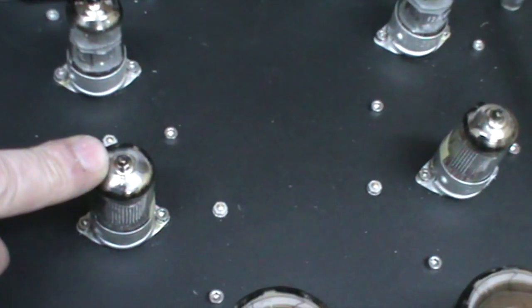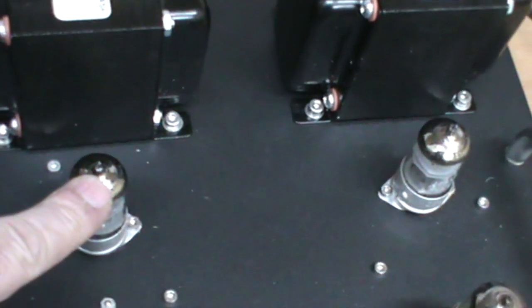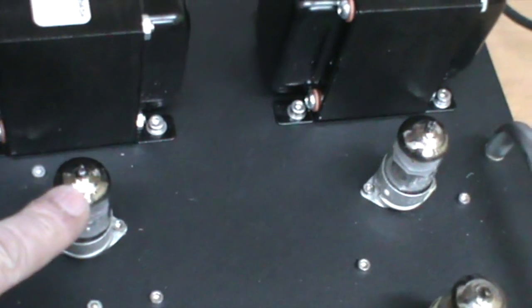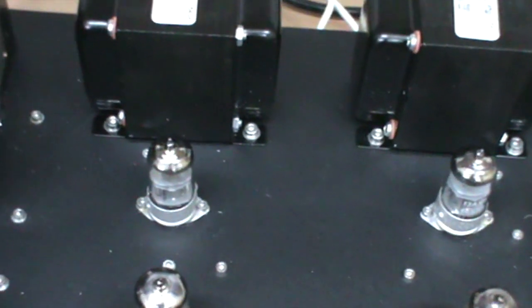A brief look at the valve lineup: the first stage is an EF86, a standard audio pentode. The next one is an ECC83 or 12AX7 double triode which acts as a phase splitter.